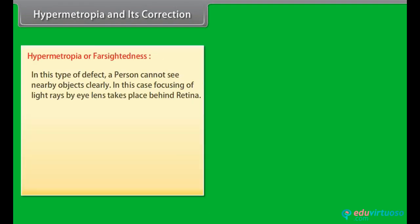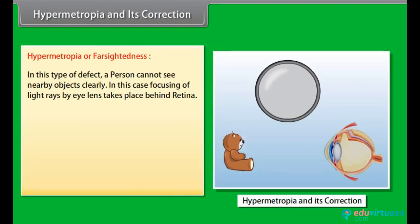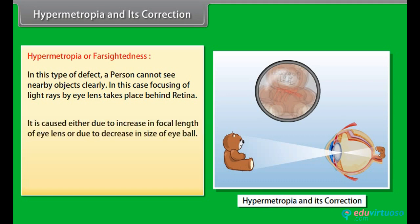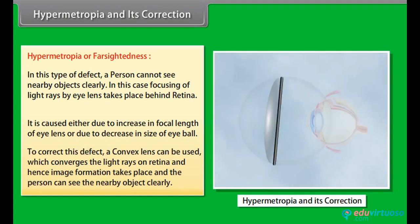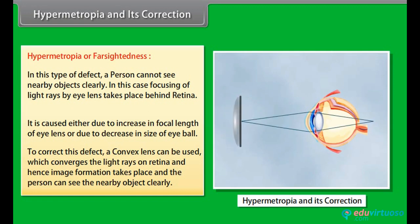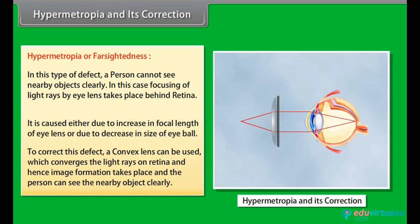Hypermetropia and its correction: In this defect, a person cannot see nearby objects clearly. Focusing of light rays by the eye lens takes place behind the retina. It is caused either due to an increase in focal length of the eye lens or due to a decrease in size of the eyeball. To correct this defect, a convex lens is used which converges the light rays onto the retina, enabling the person to see nearby objects clearly.